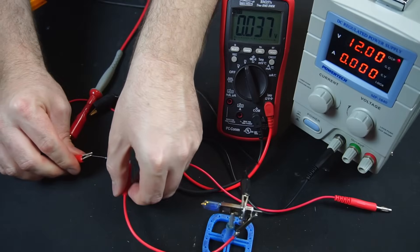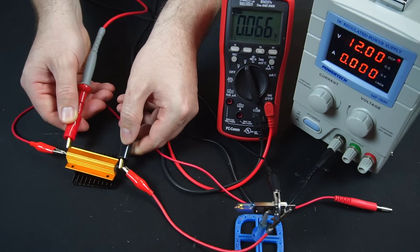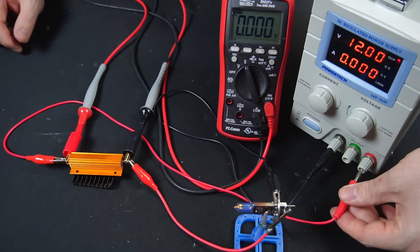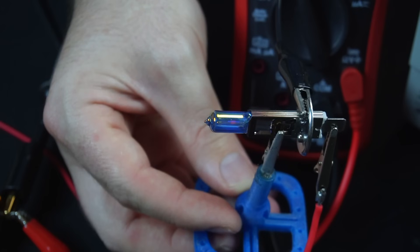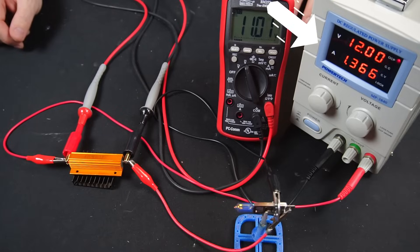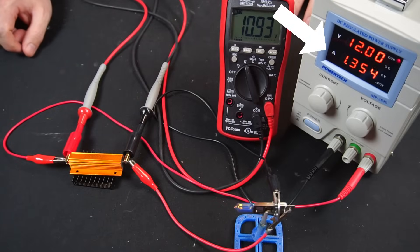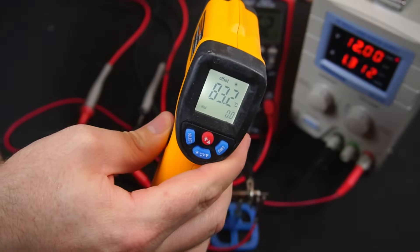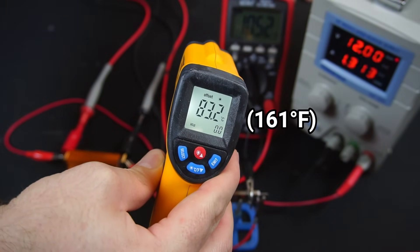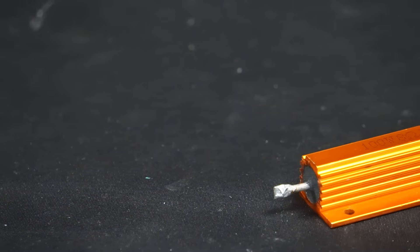Hmm, okay, well how about we use this beefy 100 watt 8 ohm power resistor? I'll replace the puny burnt out resistor with my power resistor and retest. Hmm, something's not right here. The bulb is barely glowing and the current draw should be more than 4 amps. And to top it off, the resistor is getting really hot.